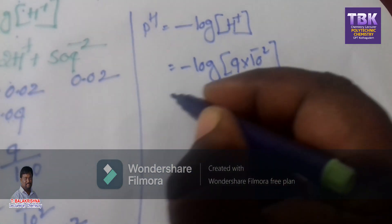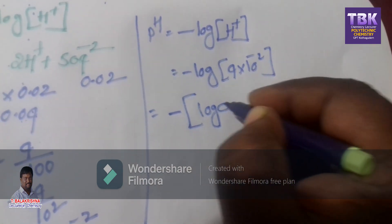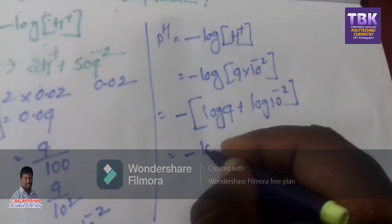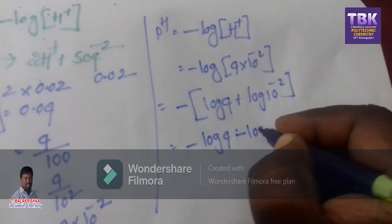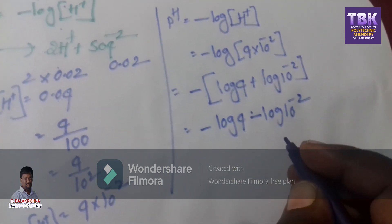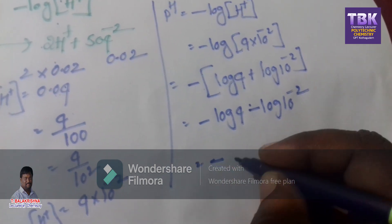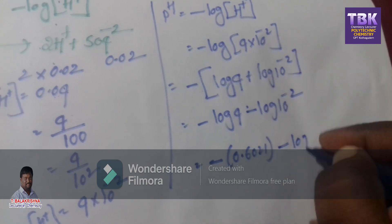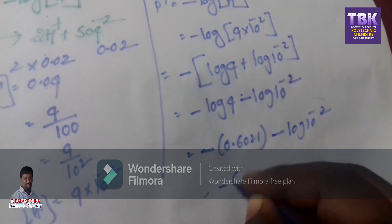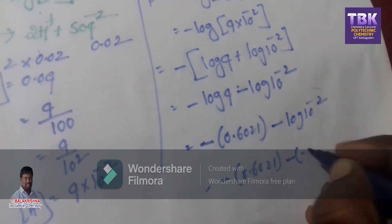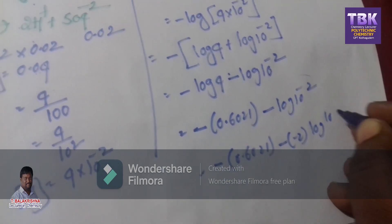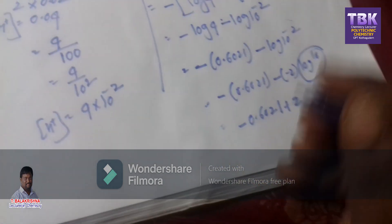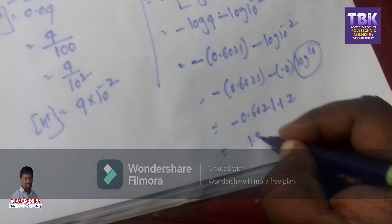Using the formula log(A × B) = log A + log B: minus [log 4 + log 10⁻²]. Applying the formula, minus log 4 minus log 10⁻². The log 4 value is 0.6021. Applying log aᵐ = m·log a: minus 0.6021 minus (−2 × log 10 base 10) = minus 0.6021 plus 2 = 1.3979. The pH of the 0.02 M H₂SO₄ solution is 1.3979.